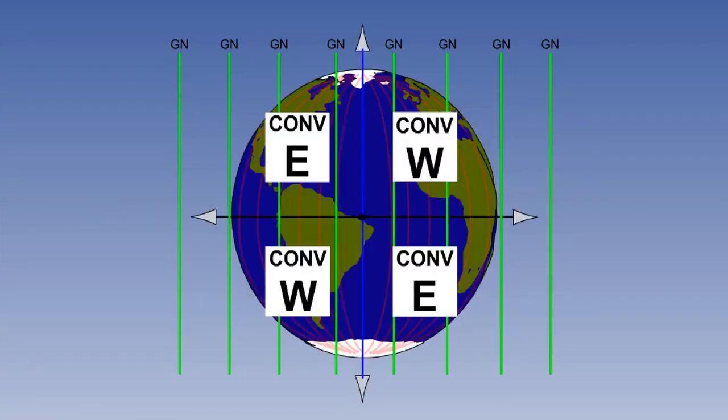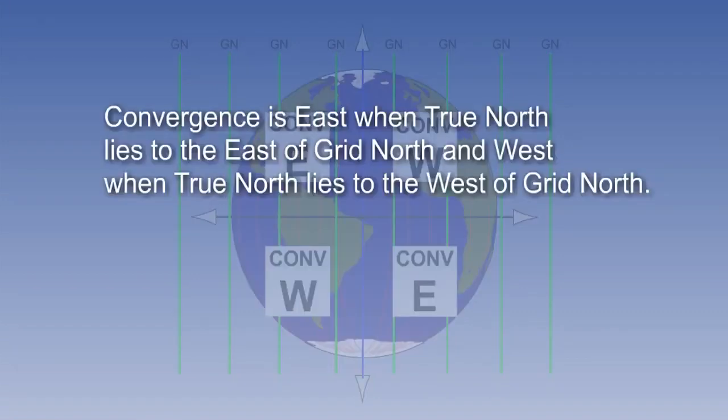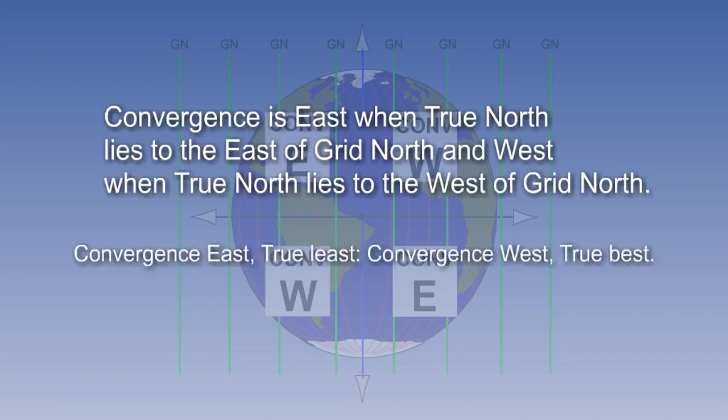This gives us the pattern east-west, west-east. It is one of those useful mnemonics like DIID, which we have encountered earlier in the course. Remember and use it when solving grid problems. Convergence is annotated easterly when true north lies to the east of grid north, and westerly when true north lies to the west of grid north. And it follows this rule. Convergence east, true least. Convergence west, true best.